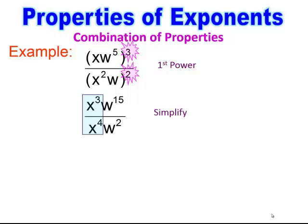When I simplify, I write a line and look at each piece. The higher exponent is on the bottom for x, so I subtract and leave it on the bottom — I get x on the bottom. The higher exponent is on the top for w, so I subtract and leave it on the top. So I get w to the 13th all over x.